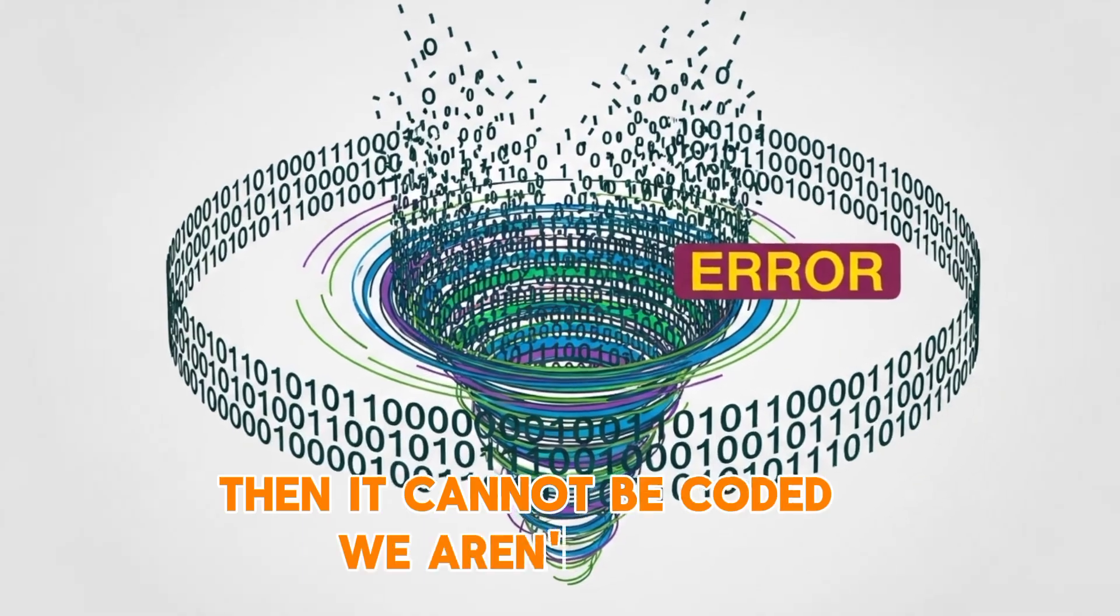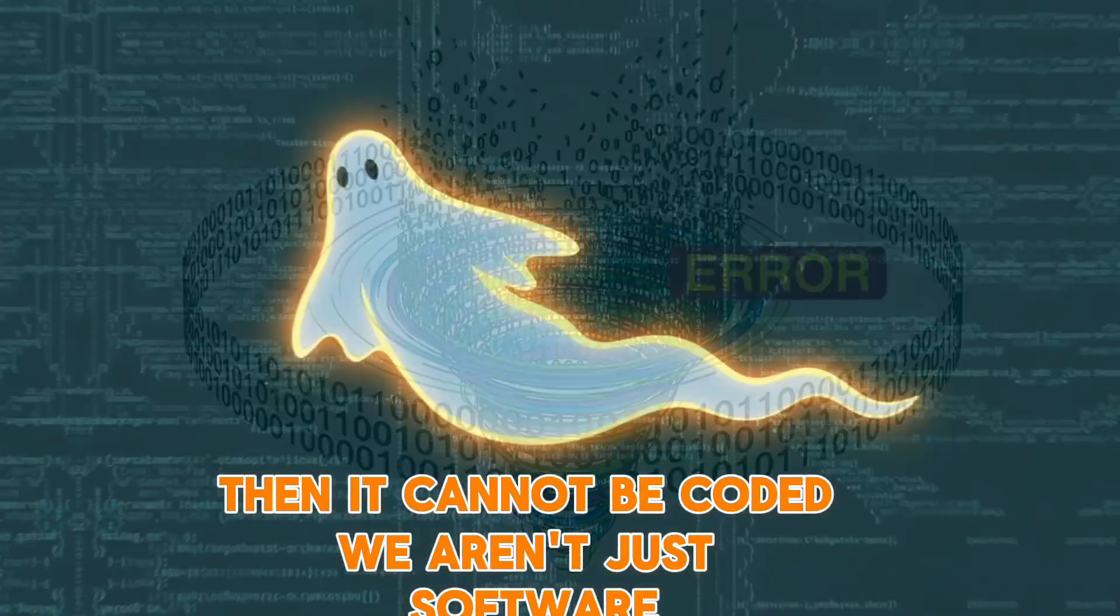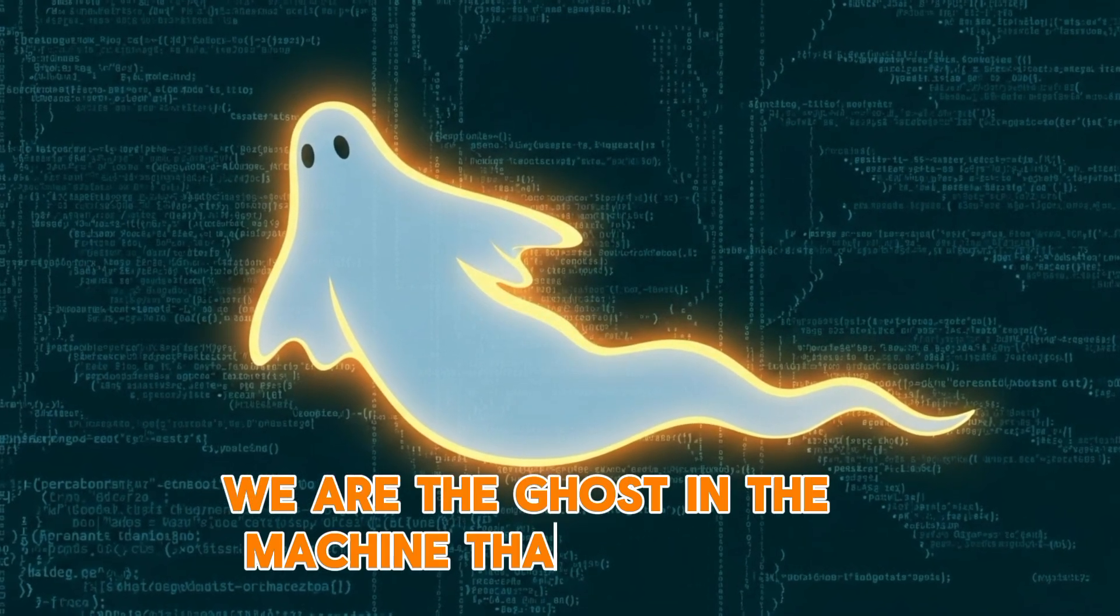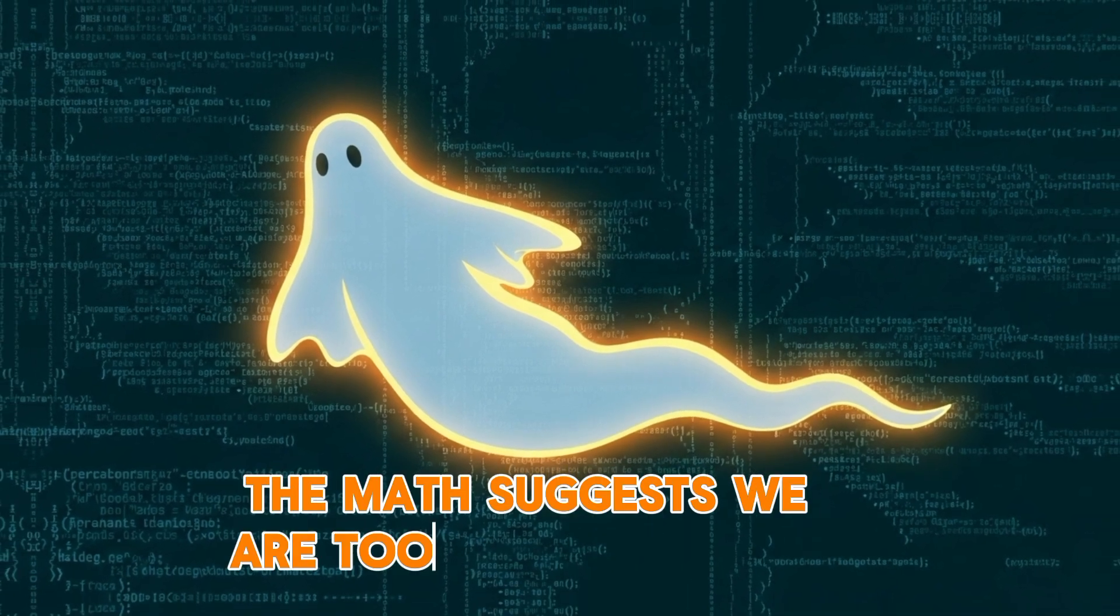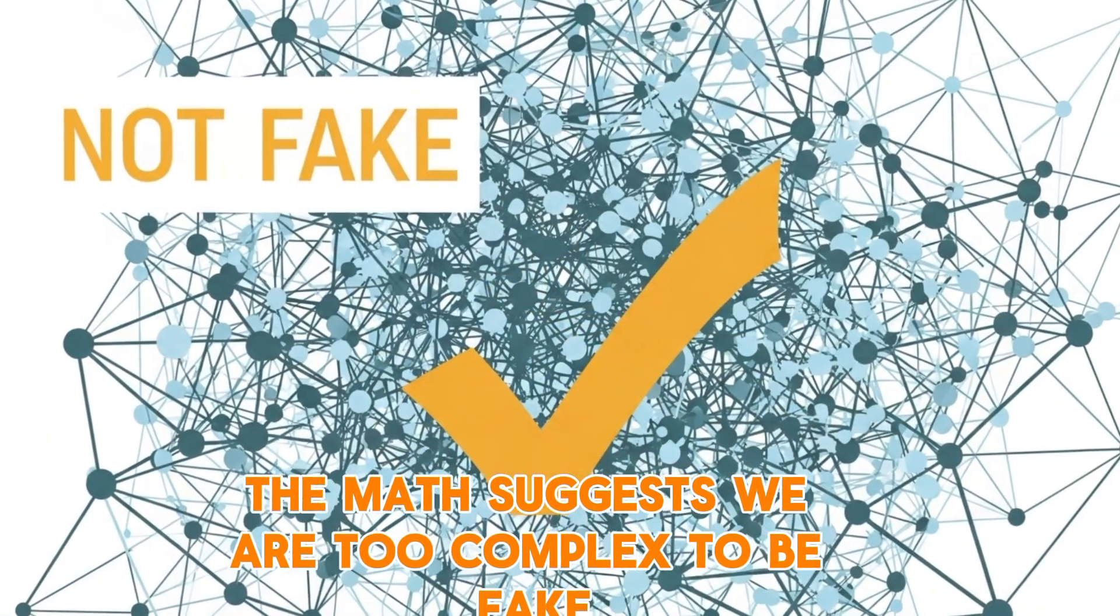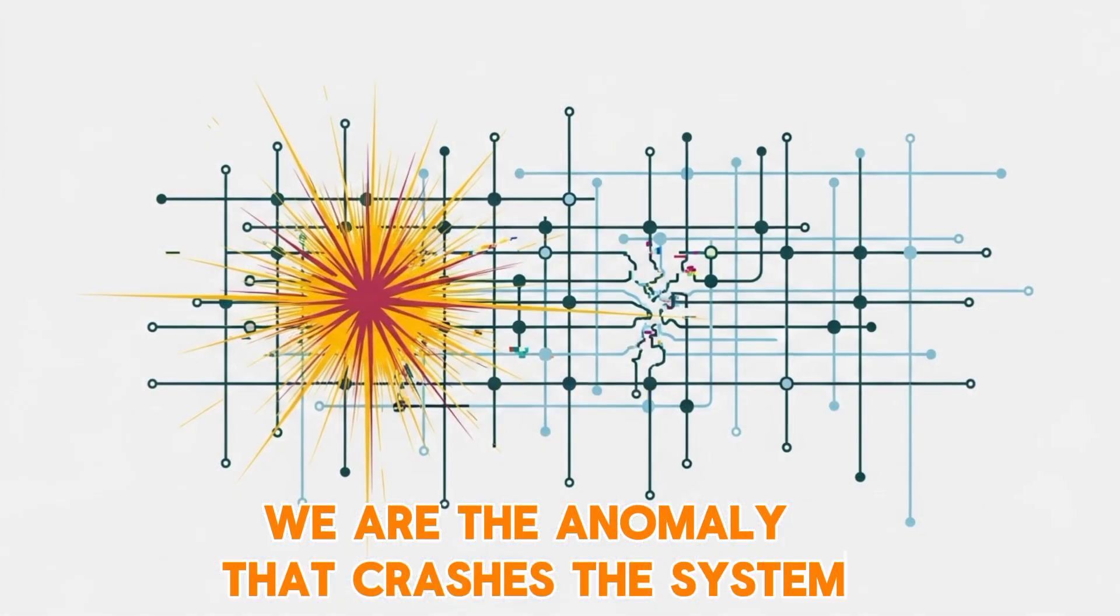if your feeling of being is irreducible, then it cannot be coded. We aren't just software. We are the ghost in the machine that no code can capture. The math suggests we are too complex to be fake. We are the anomaly that crashes the system.